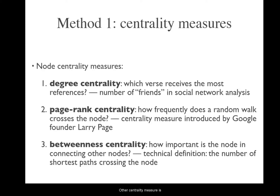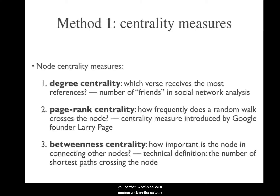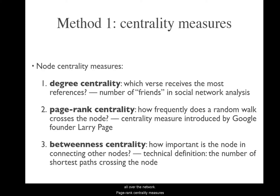Another centrality measure is PageRank centrality, named after Google co-founder Larry Page. This basically means that you perform what is called a random walk on the network — imagine walking across those links randomly all over the network. PageRank centrality measures how frequently a random walker passes through the node.